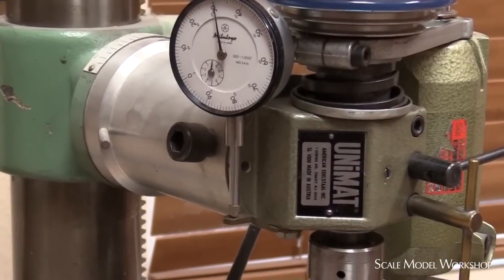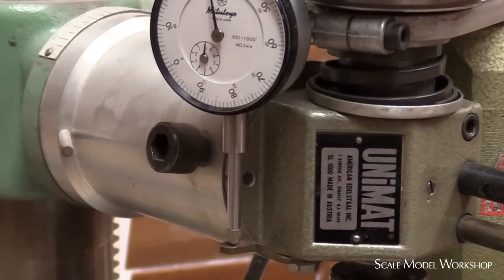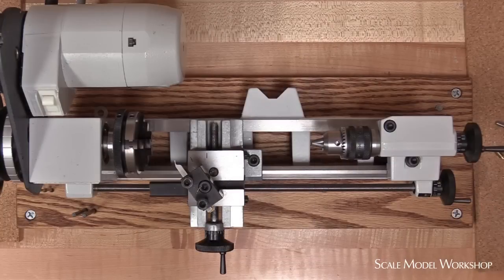The basic design of most milling heads makes it fairly simple to mount a dial indicator in a convenient location. However, the small size and design of miniature lathes makes this much more difficult.